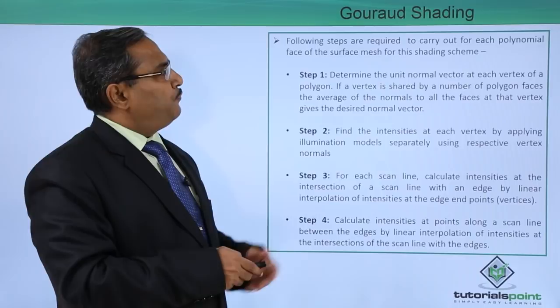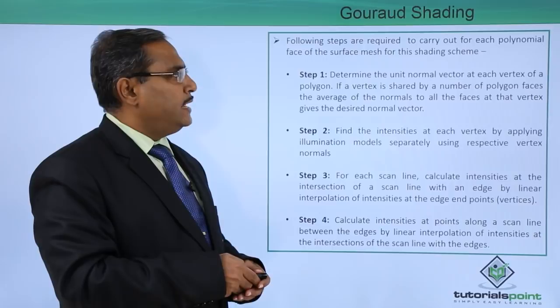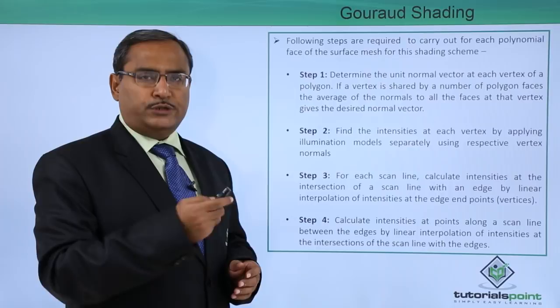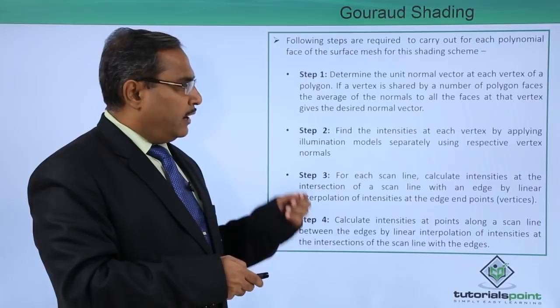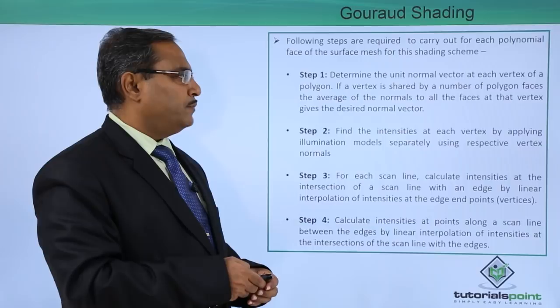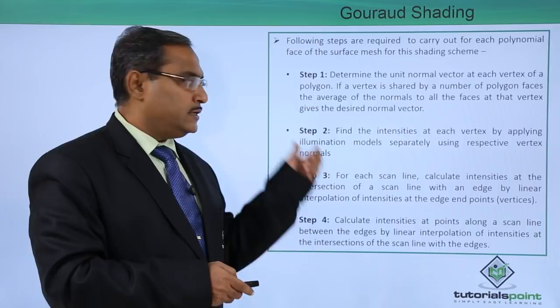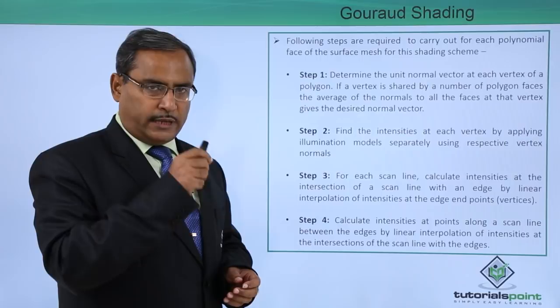The following steps are required to carry out Gouraud shading for each polygon face of the surface mesh. There are four different steps. Step 1: determine the unit normal vector at each vertex of the polygon. If a vertex is shared by multiple polygon faces, the average of the normals of all faces at that vertex gives the desired normal vector.